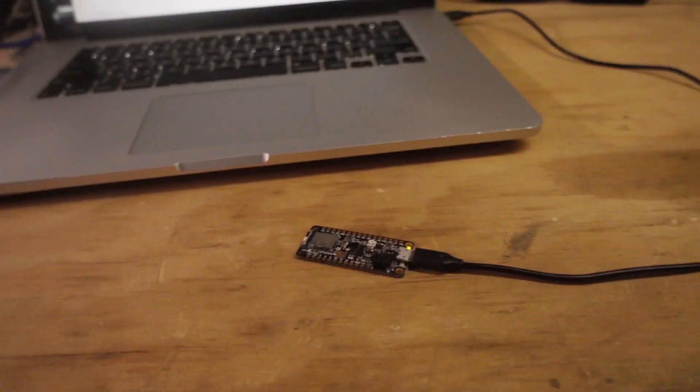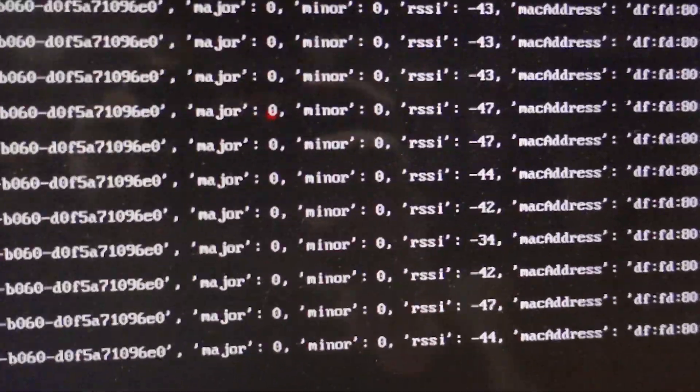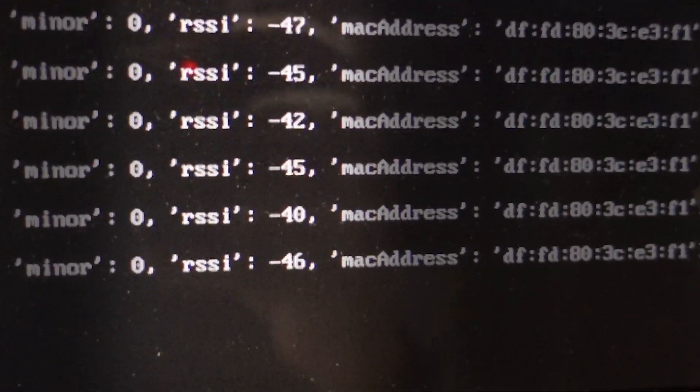I've got my beacon already plugged in and working. I've got my Raspberry Pi here. Let's run this code and see what happens. So I've already got a beacon working, right? And if I zoom in here, you can see the RSSI is around negative 45.